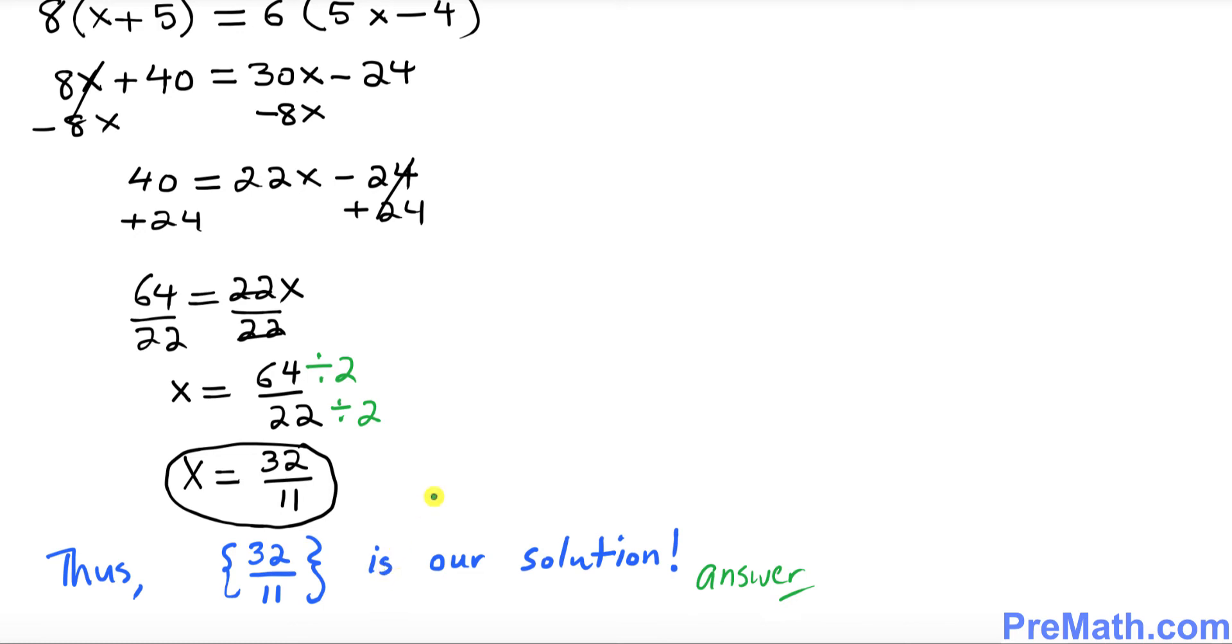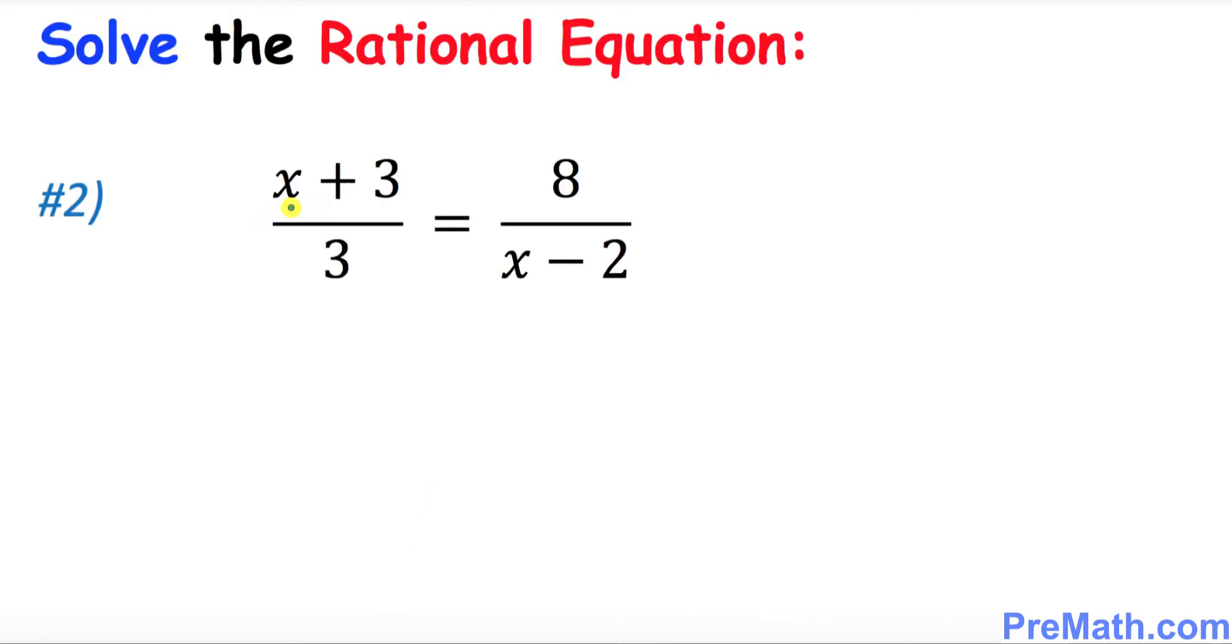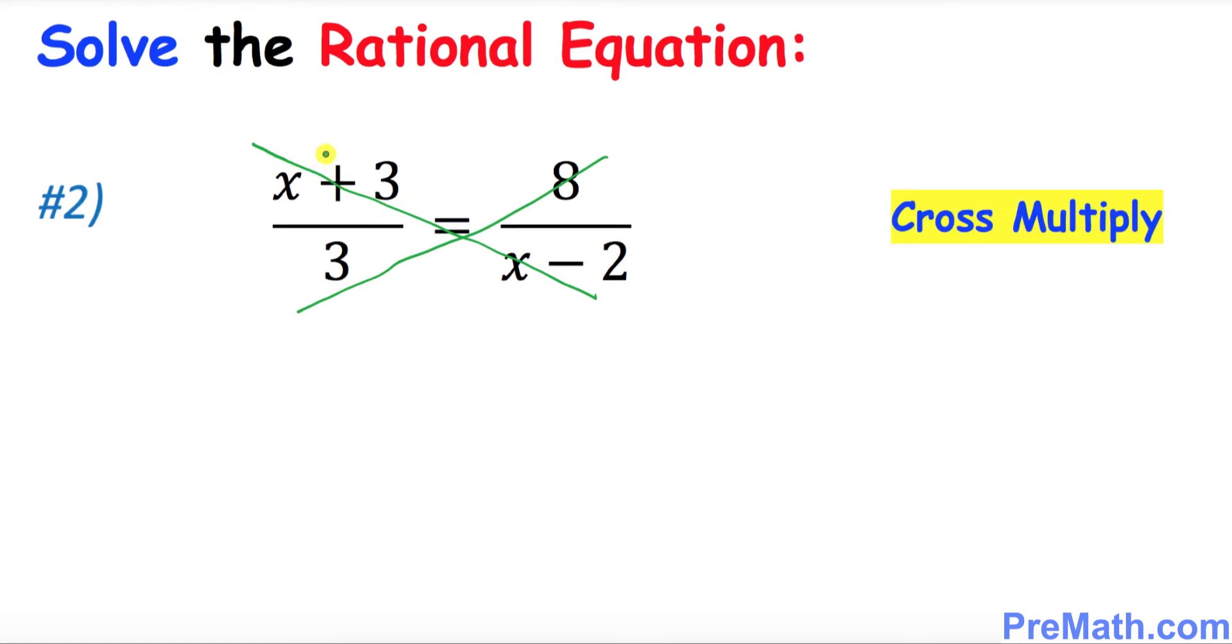Now we're going to solve this second equation. Since this is also a proportion, we are going to solve by using cross multiplication method. That means we multiply this numerator with this opposite denominator, and likewise this one with this.